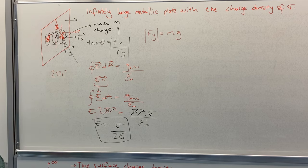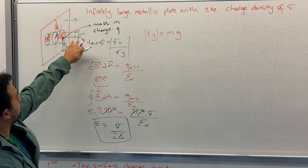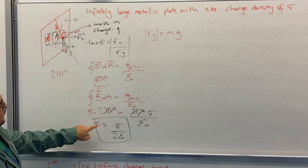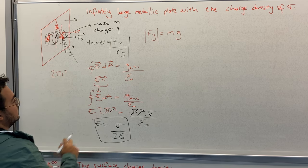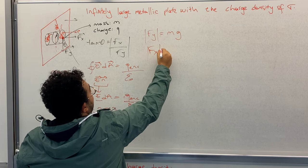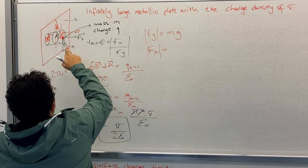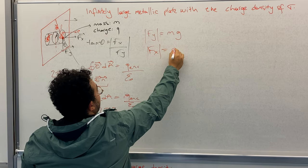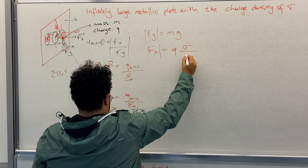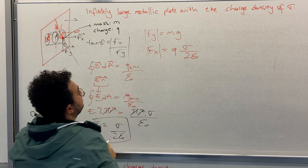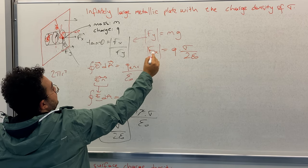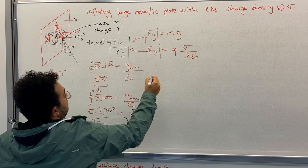Now in order to find Fx, we need to multiply electric field with the charge q. So magnitude of Fx equals to q times electric field, which is σ over 2ε₀. We will put these two measurements into this equation.